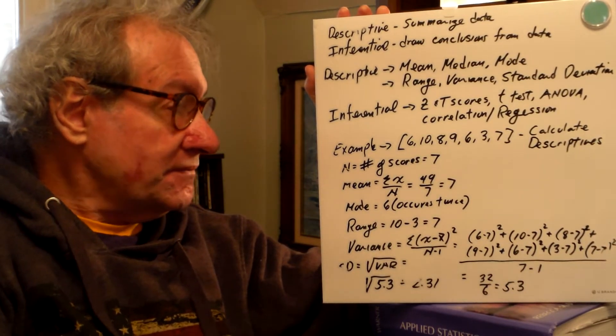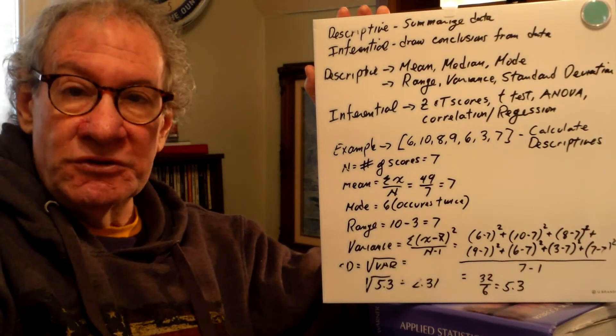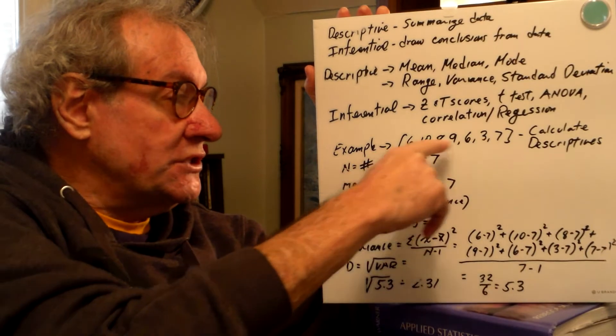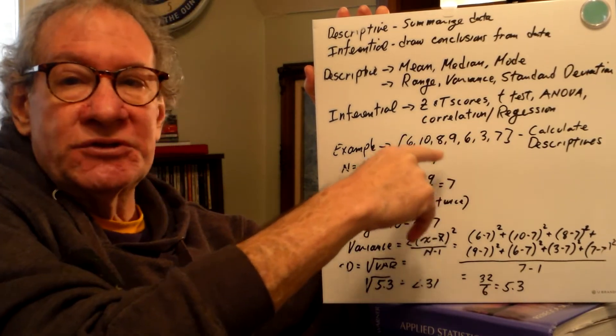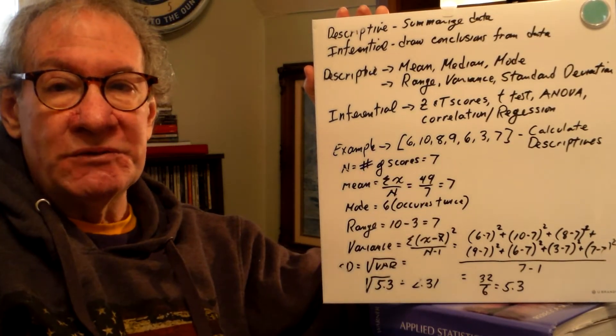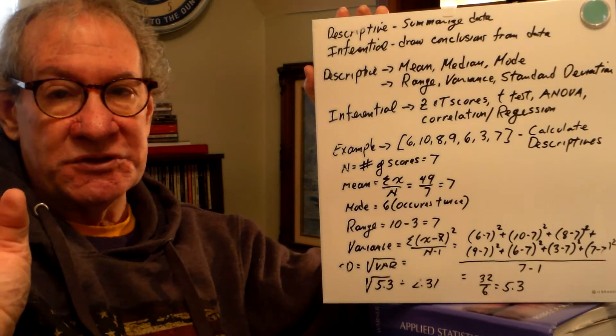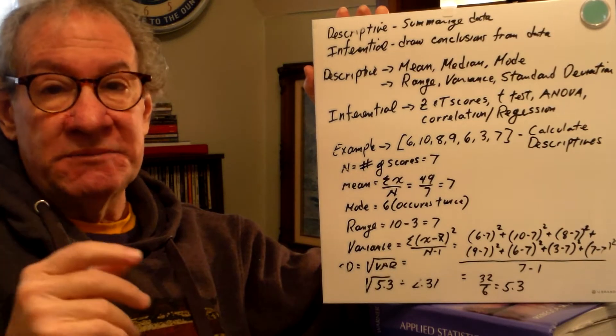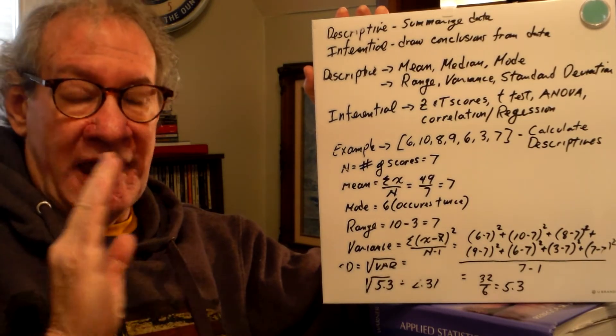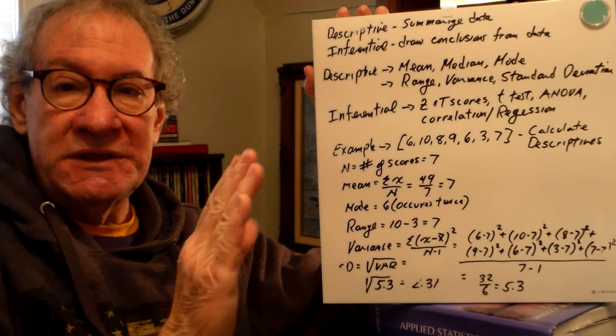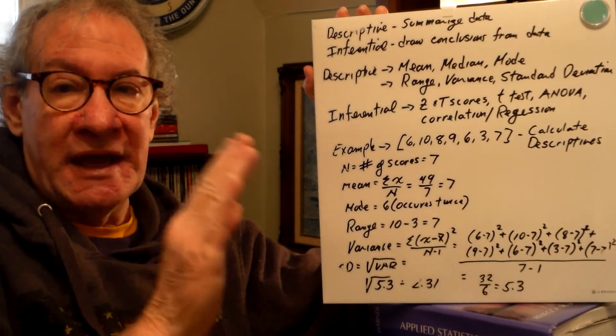I didn't write the median down here. We don't usually calculate a median. But to do it, and this is something that you can do on your own, see if you can do it. Order the scores from lowest to highest and find the middle score. The median is equal to the score that puts 50% of the scores on one side and 50% of the scores on the other side. It's just like the median on the interstate. Half the traffic's going north and half the traffic's going south, and the median separates the two halves.